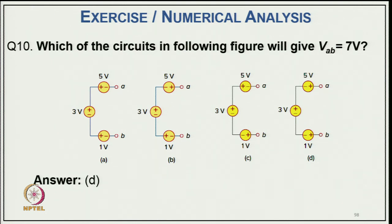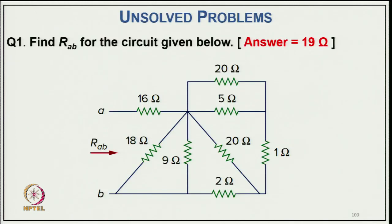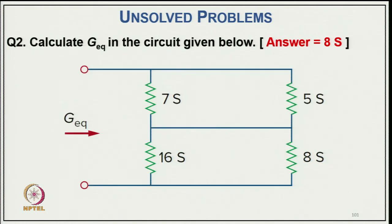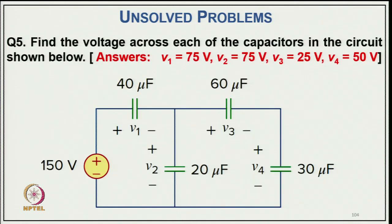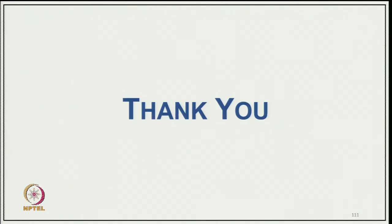For the circuit giving v_ab = 7 V: among the given options, only option d gives 8 − 1 = 7 V. There are also unsolved problems for practice — for example, combining 20 Ω in parallel with 1 Ω in series, then parallel with 20 Ω, series 2 Ω, parallel 9 Ω and 18 Ω, then adding 16 Ω. These are references and unsolved problems you can try. Thank you.